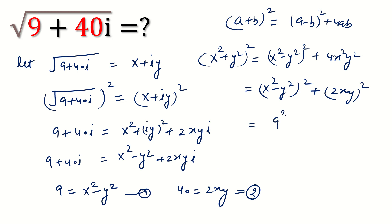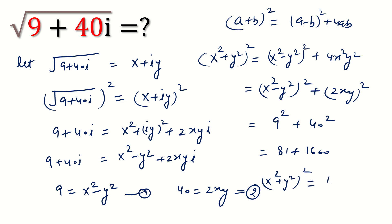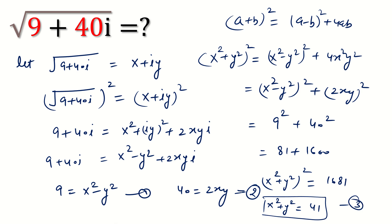Substituting the values of x squared minus y squared and 2xy from equations 1 and 2: we get 9 squared plus 40 squared, which is 81 plus 1600. So x squared plus y squared whole squared is 1681, and therefore x squared plus y squared is equal to 41. This is equation 3.